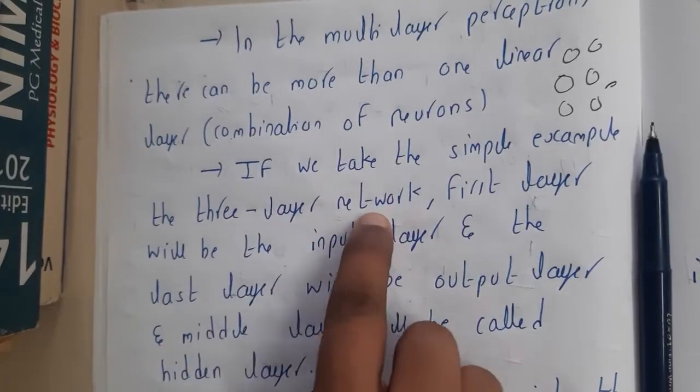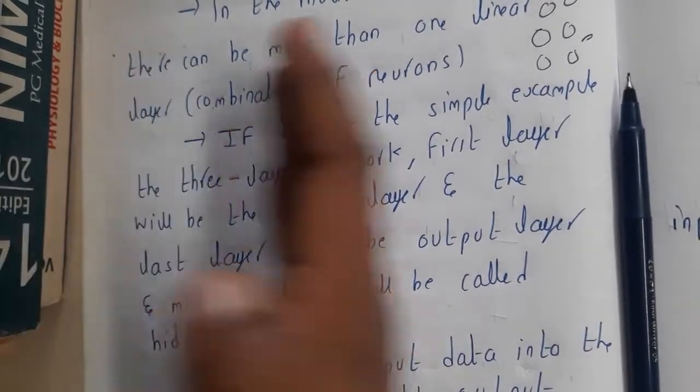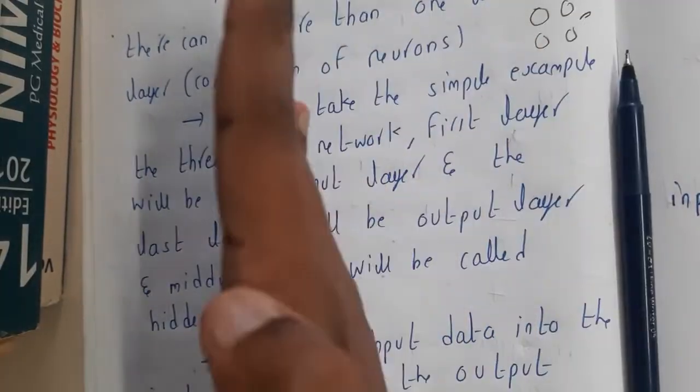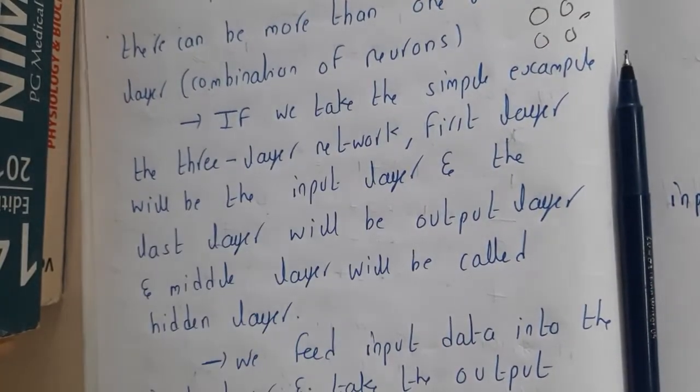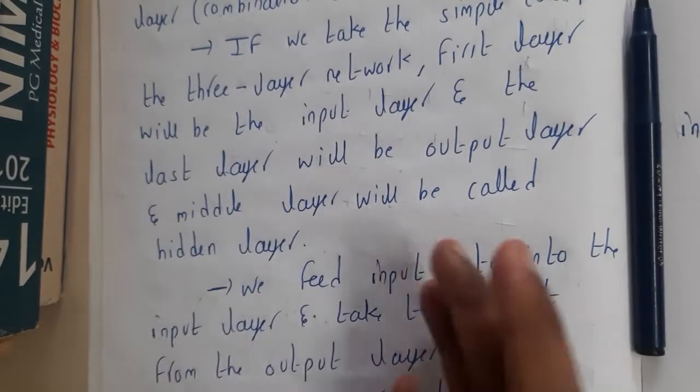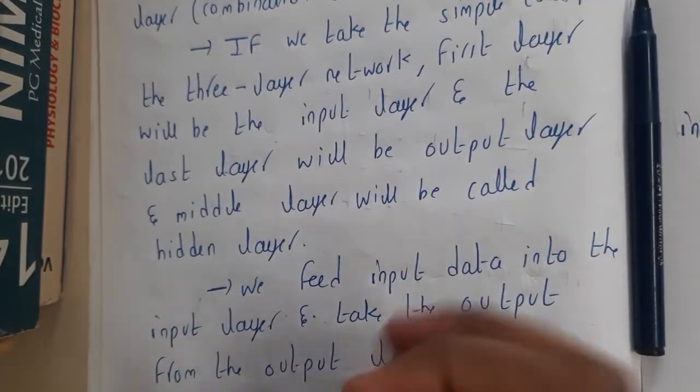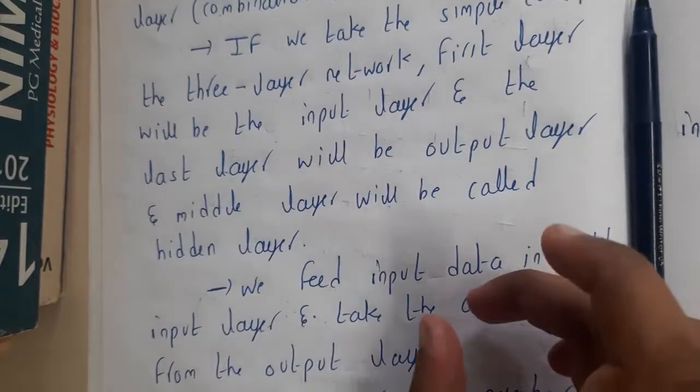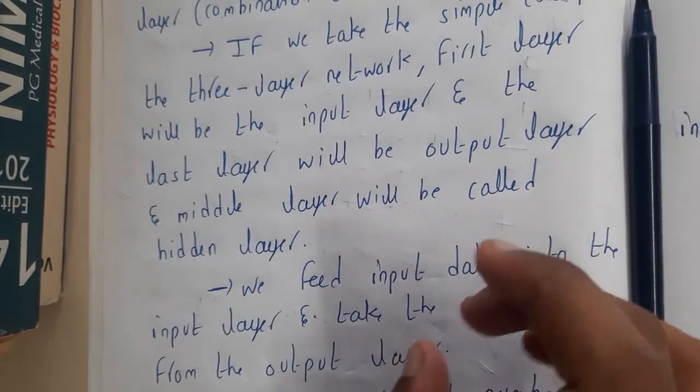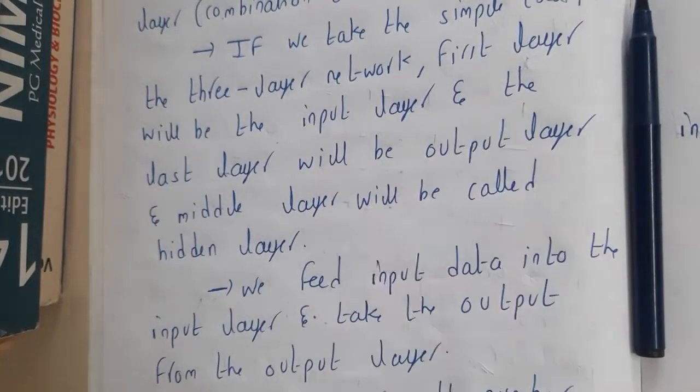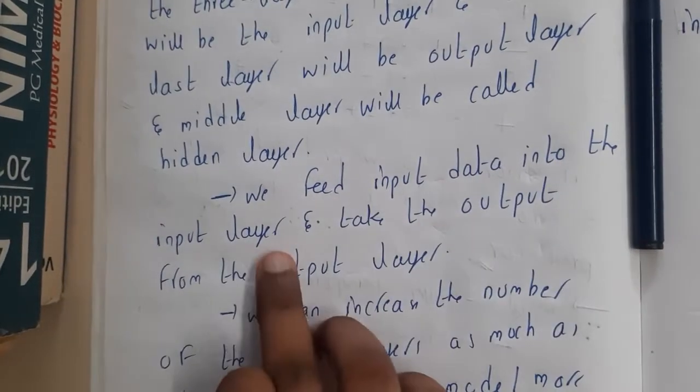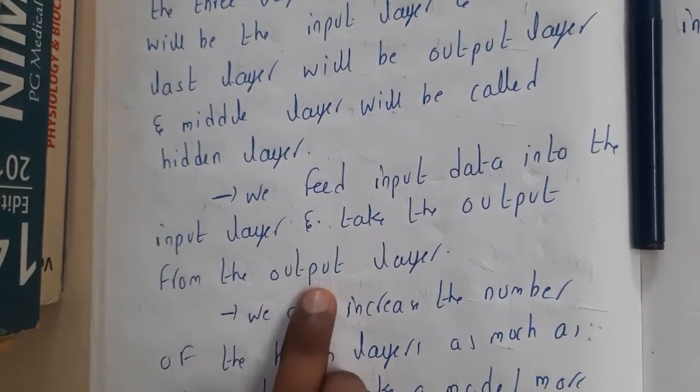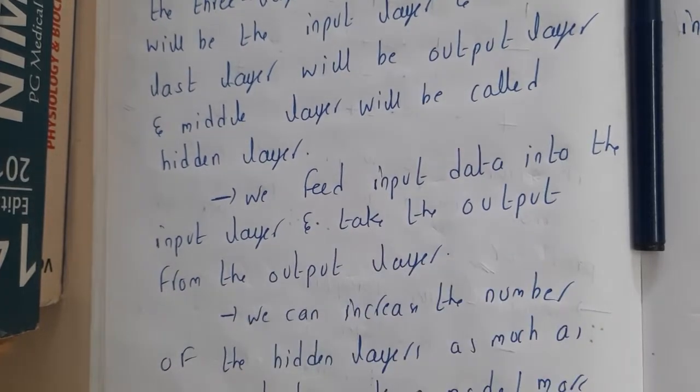If we take the simple example of a three-layered network, the first layer will be the input layer, the last layer will be the output layer, and the middle layer will be the hidden layer. In hidden layers we can have hundreds of layers based on your complexity of the problem. If you want more accurate values, you will be increasing those layers and the number of perceptrons in that layer.